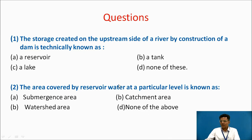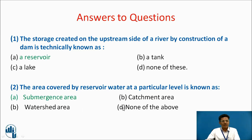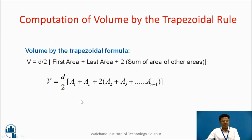Here are two small questions. The storage created on the upstream side of a river by construction of a dam is technically known as: a reservoir, a tank, a lake, or none of these? The area covered by reservoir water at a particular level is known as: a submergence area, catchment area, watershed area, or none of the above? Answers: the storage is called a reservoir — not a lake, not a tank. The area covered by reservoir water at a particular level is known as a submergence area.